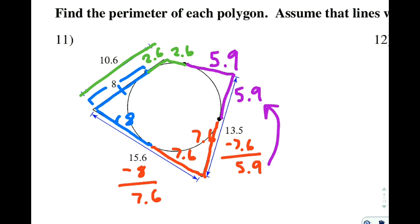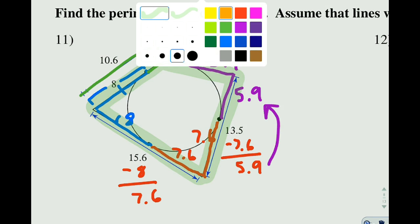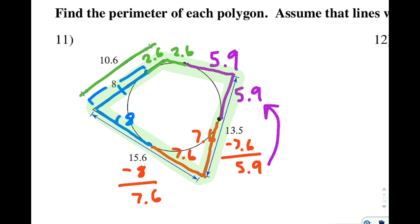My goal is to find the perimeter. I want to know the distance along the entire outside of this shape. I could add up all the little numbers: 8 plus 8 plus 2.6 plus 2.6 plus 5.9 plus 5.9 plus 7.6 plus 7.6. That would work. An even faster way is to add up the big numbers. I have 10.6, 15.6, and 13.5 that are entire side lengths. So that covers this, this, and this. The last part I don't have right here, I can get by adding the 5.9 and the 2.6 just once.